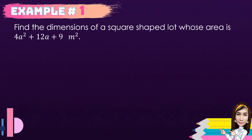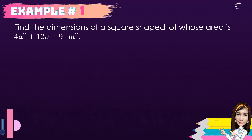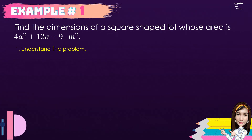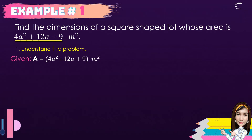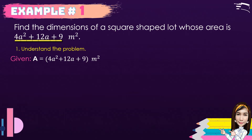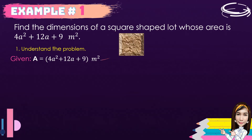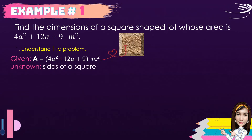Find the dimensions of a square-shaped lot whose area is 4a² + 12a + 9 square meters. First, we need to understand the problem. We're going to analyze and write the given: the area of a square-shaped lot is 4a² + 12a + 9 square meters. Then we're going to illustrate the given, and write the unknown, which is the sides of the square.